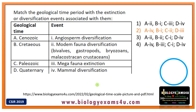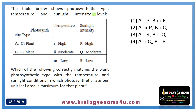You can find a detailed note on the geological time scale — the link is in the description. The final question: the table below shows photosynthetic type, temperature, and sunlight intensity levels. C3 plants: high temperature, high sunlight intensity; C4 plants: moderate temperature, moderate sunlight intensity; and low temperature, low sunlight intensity. Which correctly matches the plant photosynthetic type with conditions where photosynthetic rate per unit leaf area is maximum?